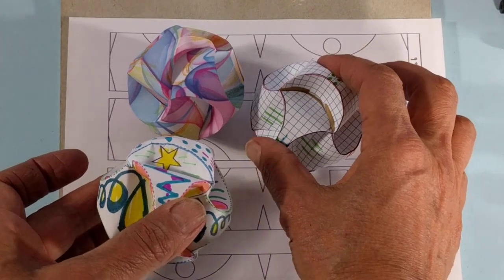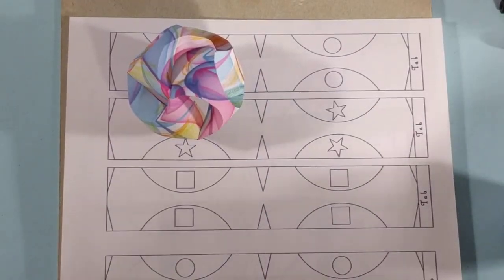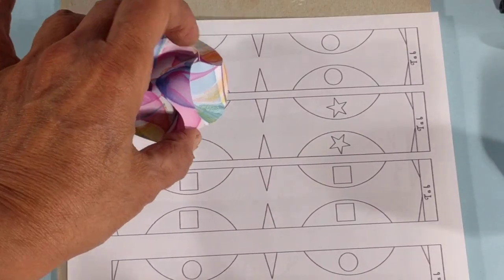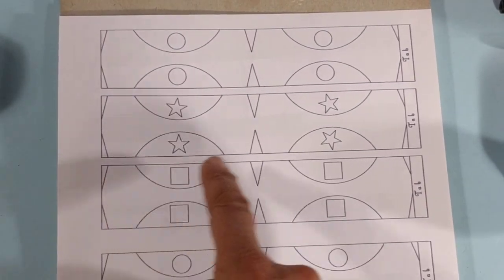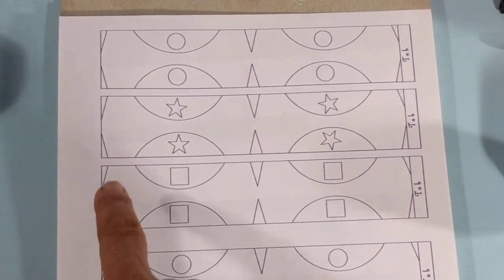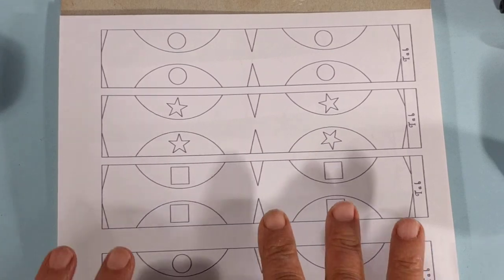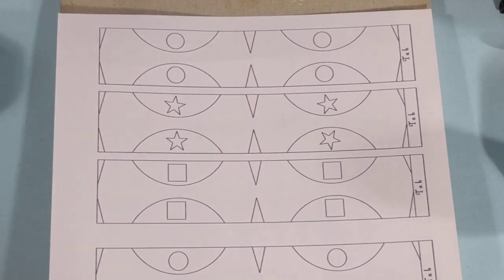To make these tricky looking ornaments, we start off with cutting out three rectangles. Don't make any folds, any other cuts, just the rectangles, and this template is in the notes at the bottom of the video.